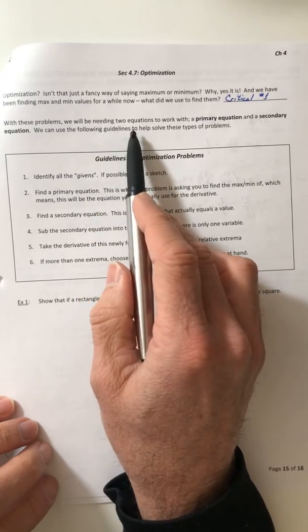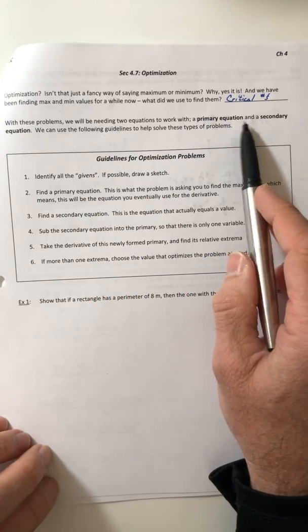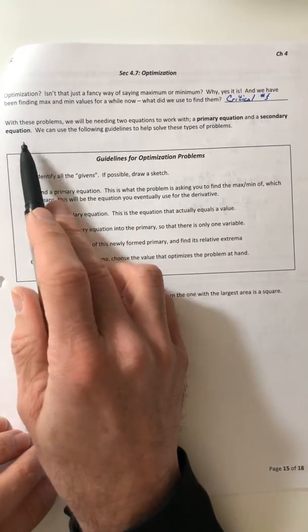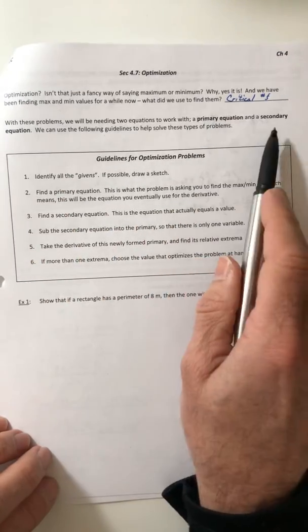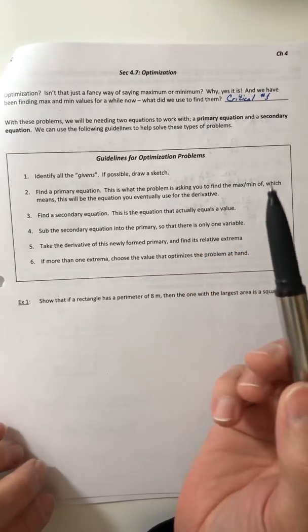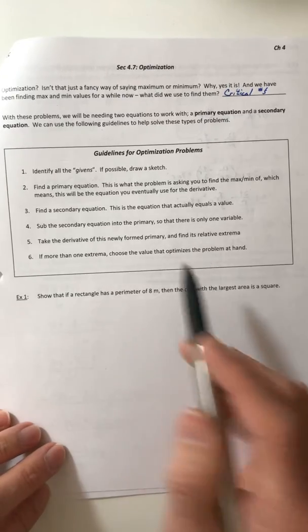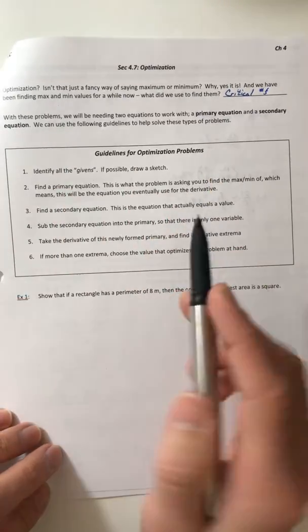But with these problems we're going to need two equations to work with: a primary equation and a secondary. The reason we need both of them is because with real-world problems most of the time they have more than one variable in the problem, so we need two equations to work with.